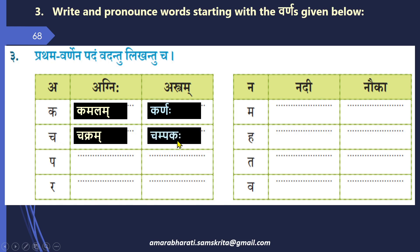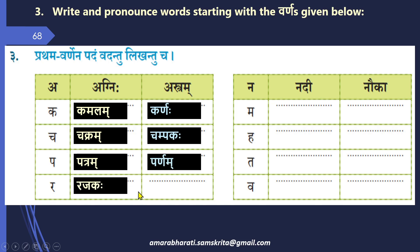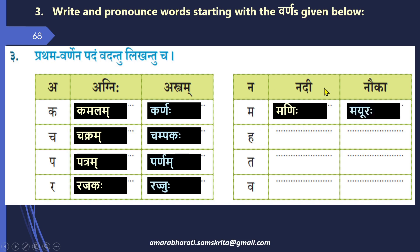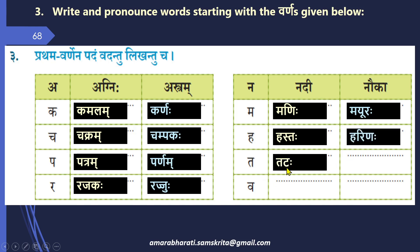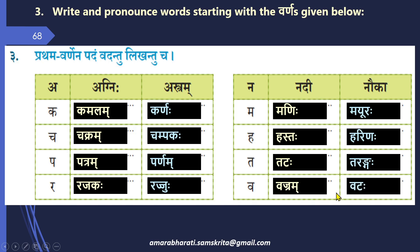Next question. Prathama — Pa: Is a Champaka flower. Pa is Patram — a letter, or Parnam — a leaf. Ra is Rajakaha — a washerman, or Rajjuhu — a rope. Ma is Manihi — a gemstone, and Mayuraha — a peacock. Na is Nadi — a river, Nauka — a boat or a ship. Ha is Hastaha — hand, or Harinaha — a deer. Ta is Tataha — the bank of a river or lake, Tarangaha — a wave. Va is Vajram — a diamond, and Vataha — a banyan tree, Vatavriksha. So we learnt all these new words in this particular slide.